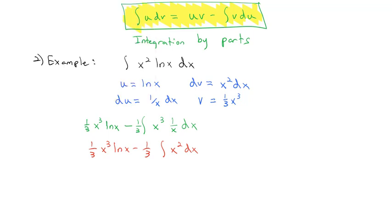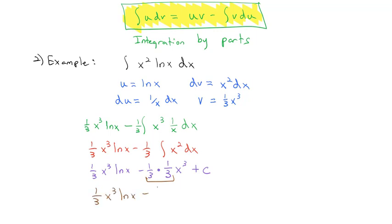We know how to integrate this. So we have one third x cubed natural log of x minus one third times the antiderivative of x squared, which is x cubed times one third, and we also need to add a constant. Simplifying that multiplication, our final answer is one third x cubed natural log of x minus one ninth x cubed plus a constant — the antiderivative of x squared times natural log of x.